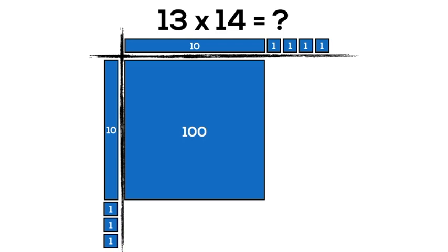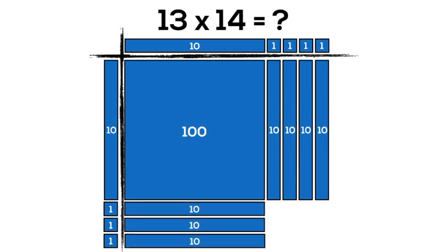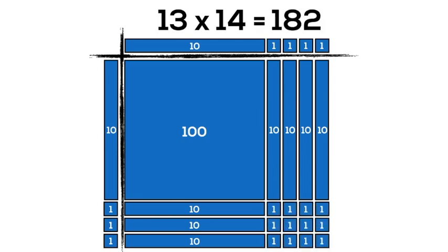Then we can look at the empty space in the top right of our array and note that now we have to multiply 10 from the factor of 13 by the remaining 4 units from the factor of 14 in order to get 4 10 rods or a sum of 40. Repeating the same logic for the 3 remaining units from the factor of 13, we then multiply 3 by the 10 rod to get 30 or 3 10 rods, and multiply 3 by 4 to get 12 individual units for a final product of 182.